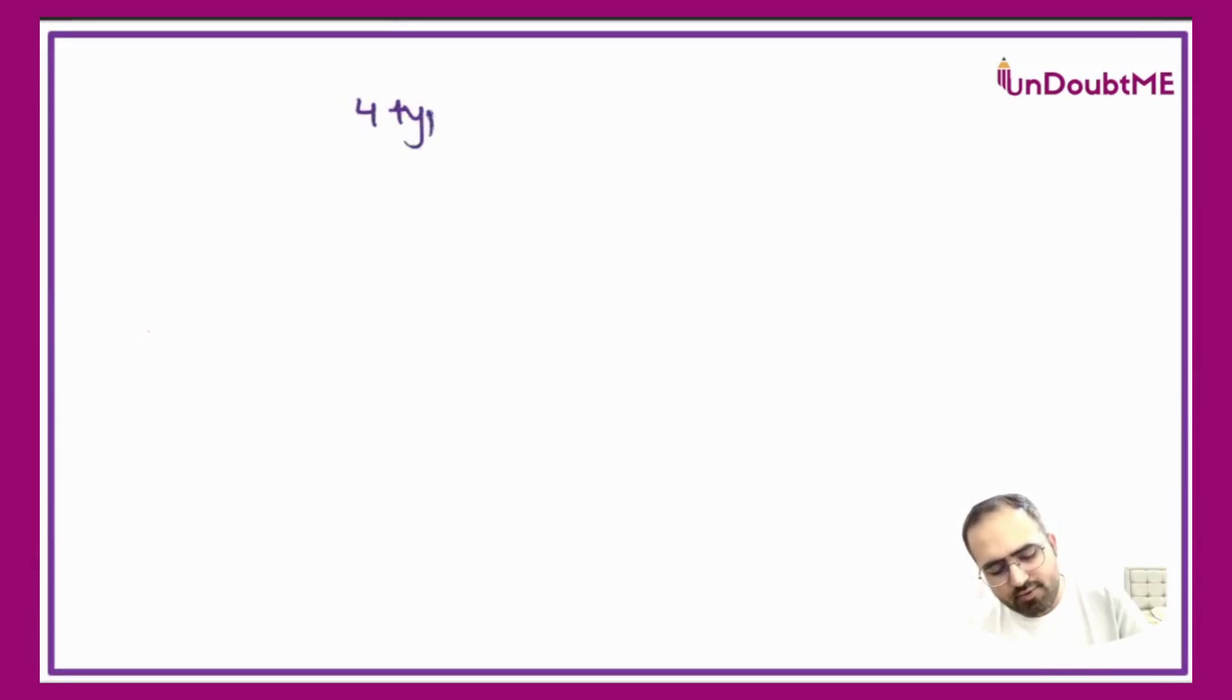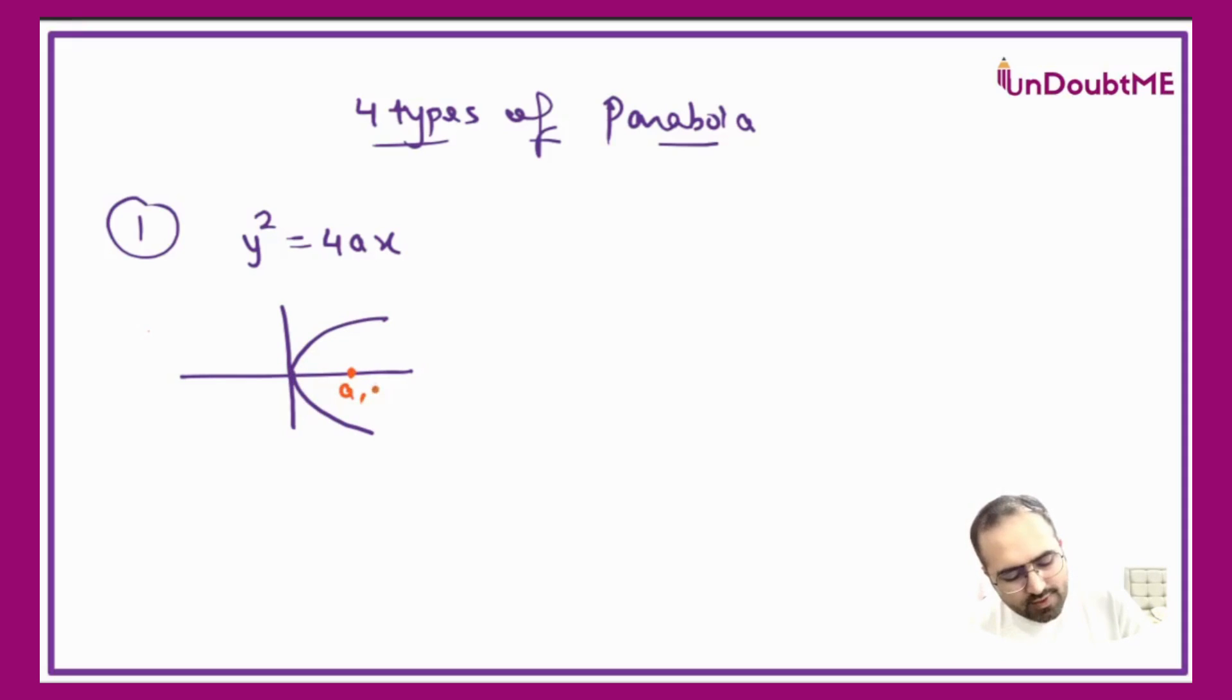There are four types of parabola. First one is y² = 4ax. All the parabola should be clear in your head with diagram. Diagram is very important, so for all of them make sure that you draw the diagram properly and that picture should be there in your mind.